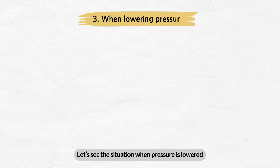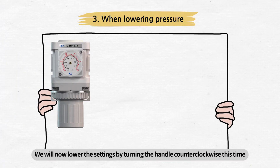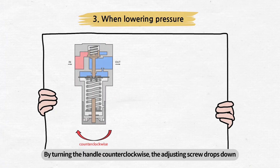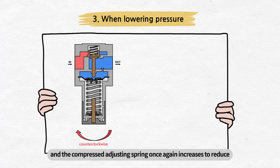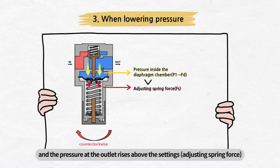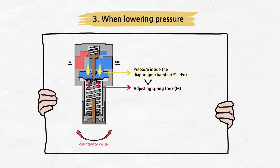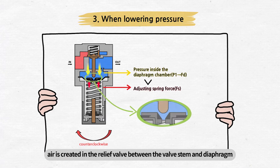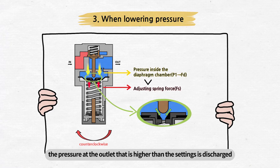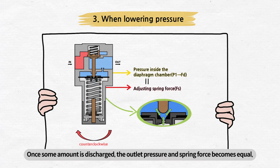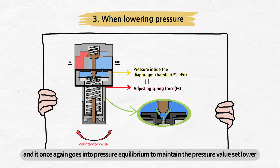Let's see the situation when pressure is lowered. We will now lower the settings by turning the handle counter-clockwise. By turning the handle counter-clockwise, the adjusting screw drops down and the compressed adjusting spring releases to reduce the force of the adjusting spring. The pressure at the outlet rises above the setting and the diaphragm drops. When the diaphragm goes down, air is created in the relief valve between the valve stem and diaphragm. Through this space, the pressure at the outlet that is higher than the settings is discharged. Once some amount is discharged, the outlet pressure and spring force become equal, and it once again goes into pressure equilibrium to maintain the lower set pressure value.